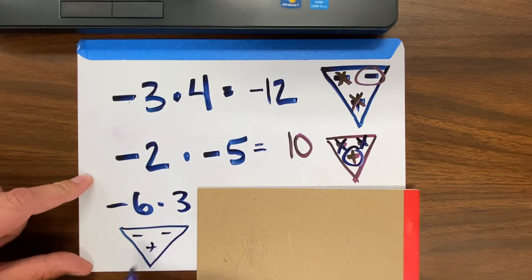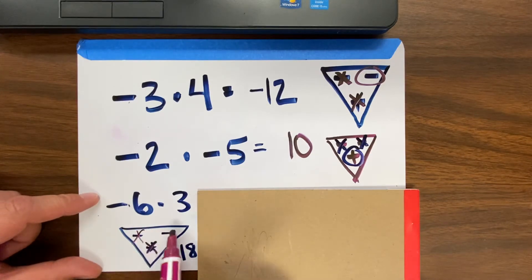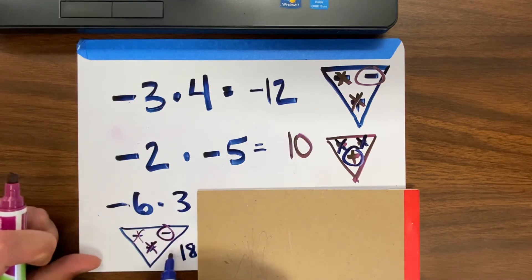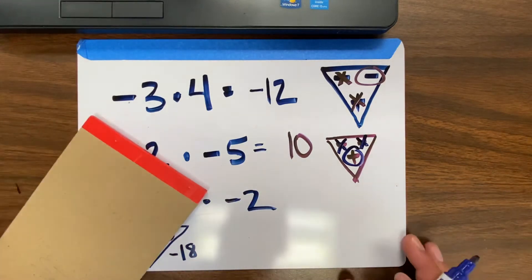Negative, negative, positive. 6 times 3 is 18. The first one is a negative. The second one is a positive. So I know it's going to be negative 18. Now I could take and cover up that since I used it all up.